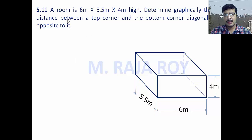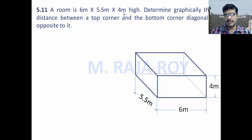In this tutorial, I will explain the process of a straight line problem. This is a typical problem. A room is 6 meters by 5.5 meters and 4 meters height. Determine graphically the distance between the top corner and the bottom corner diagonally opposite to it.